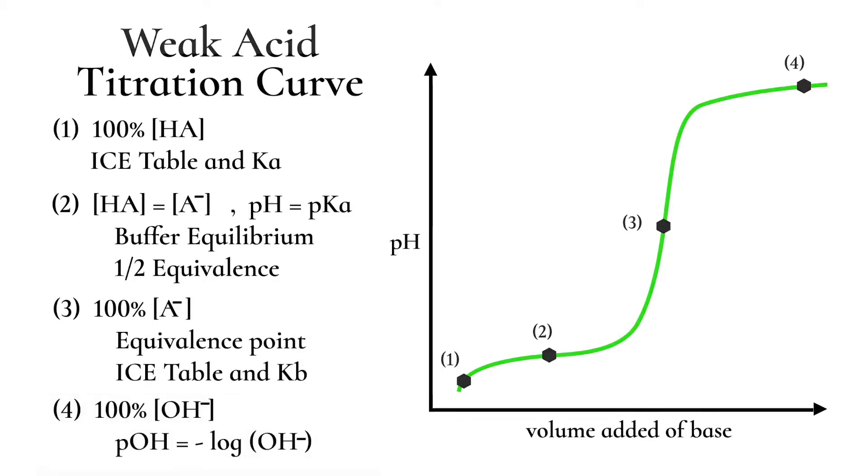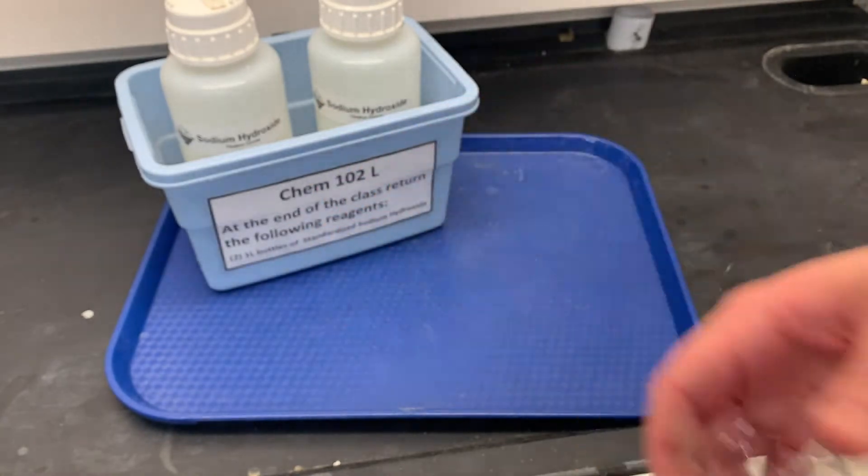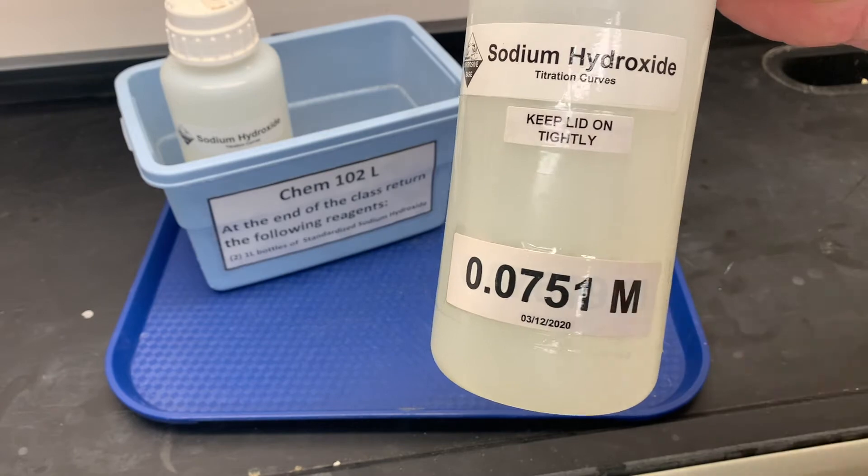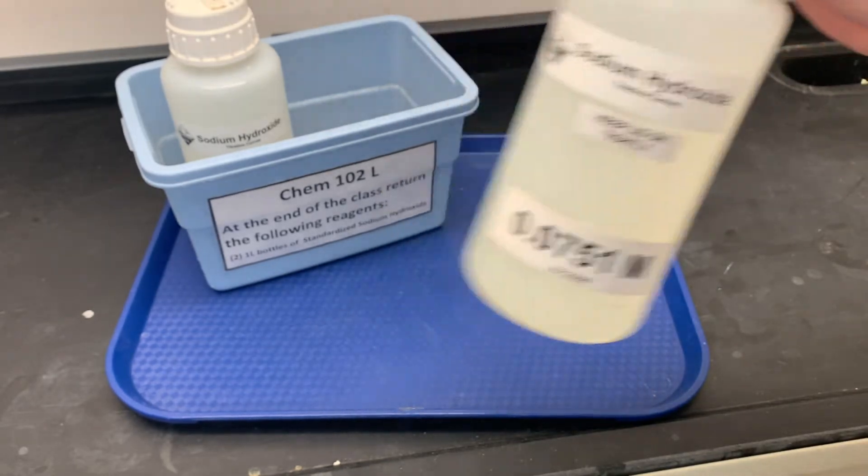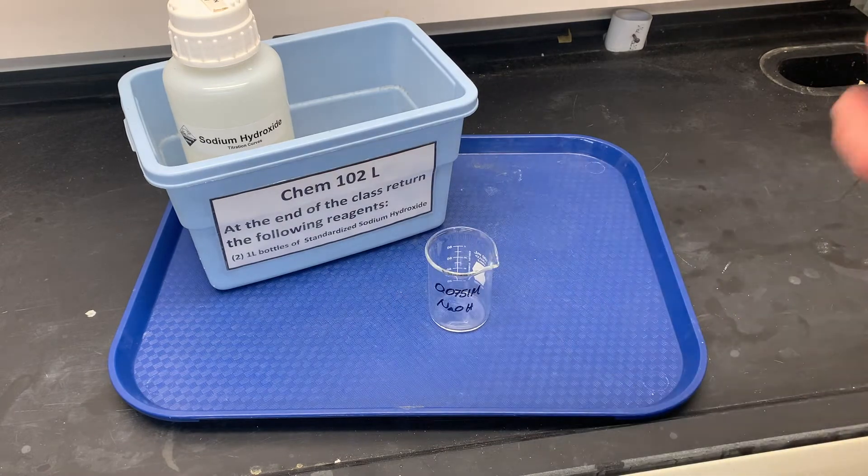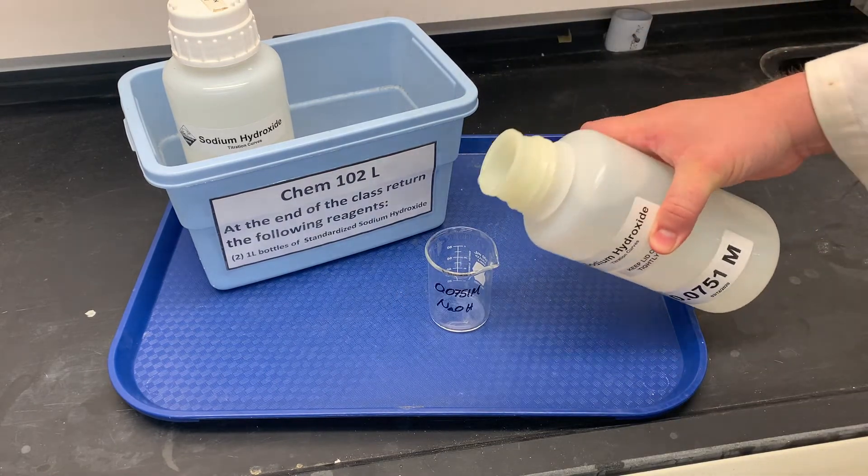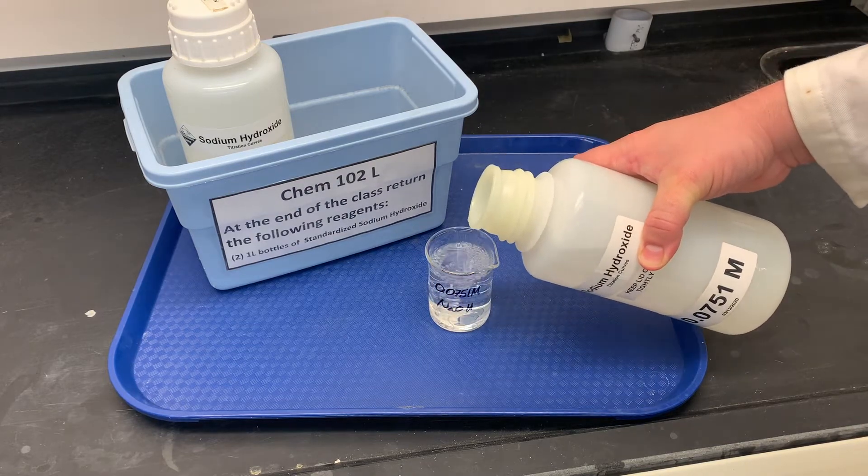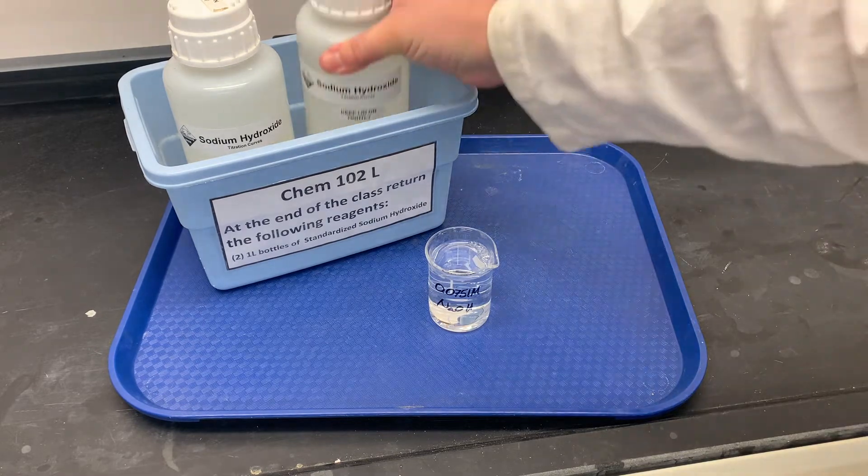Okay, we're going to start by getting our reagents together. First, we're going to need our sodium hydroxide. Now, today's is this concentration. Yours may be a little different. Make sure you write down whatever the concentration is given. In this case, we're going to have to do three titrations. So I'll need about 75 plus a little bit more for a rinse. So I'll take about 100, just a little bit less.